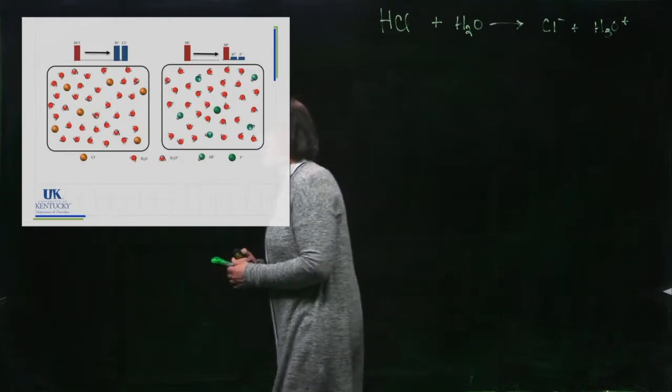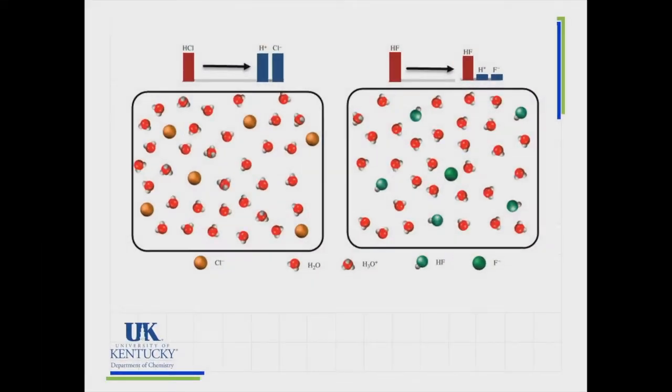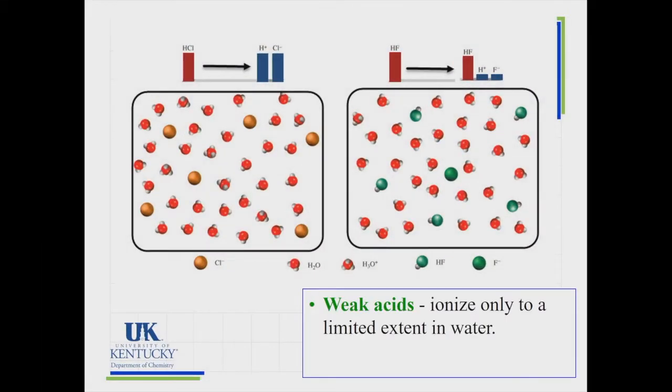Now we're going to focus on this diagram to show the difference between a strong acid and a weak acid. A weak acid only ionizes to a limited extent. It's not like you have 100% and then 99%. It's either 100% or it's really low, usually maybe 1%, 2%, 10%, something in that range.